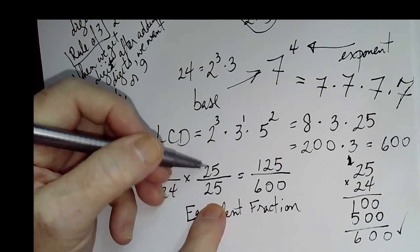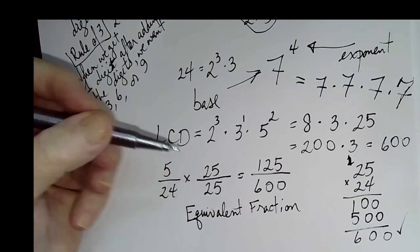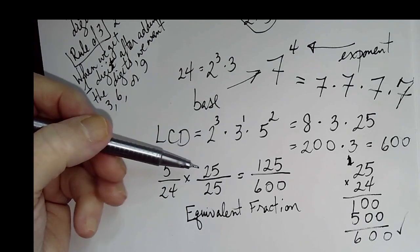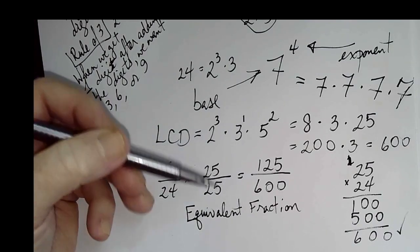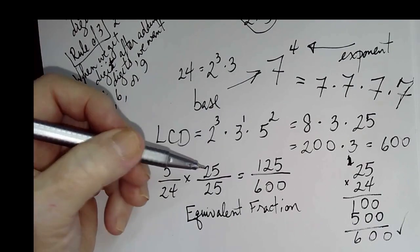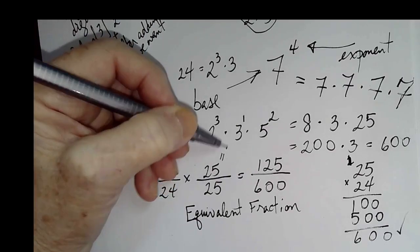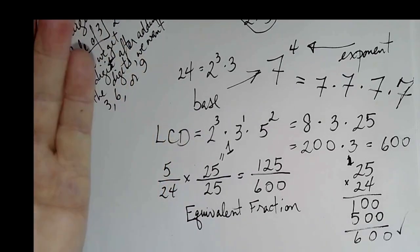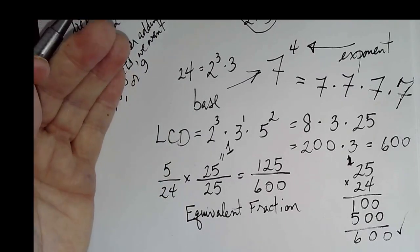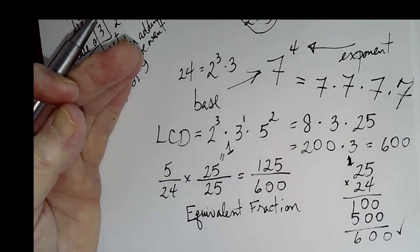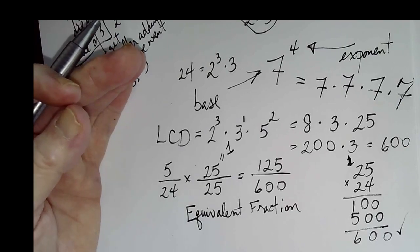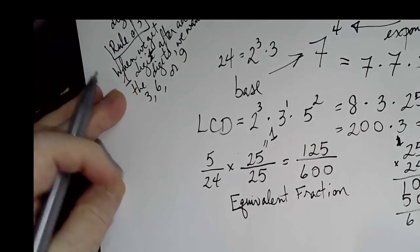I can multiply by anything I want as long as I multiply the same thing in the numerator and the denominator. And that's because 25 divided by 25, well, that's just 1. And you can multiply by 1 and not change anything at all. You just change how it looks, but not what it means.